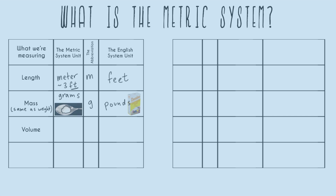Next is volume, which often comes up in science problems. Volume is most often thought about in terms of liquid — basically how much liquid you have. In the English system we think of a gallon, like a gallon of milk. In the metric system we use liters. You're probably familiar with a two-liter bottle of soda — that's two liters. The abbreviation for liter is a capital L, and the lowercase or capital really does matter.